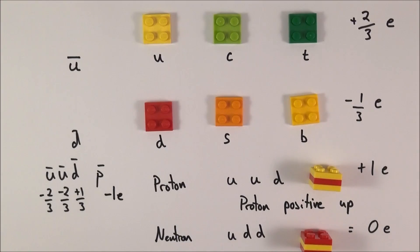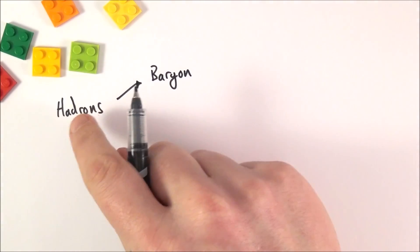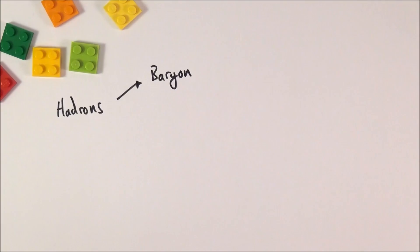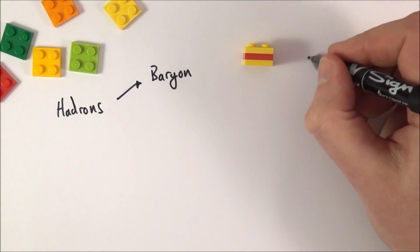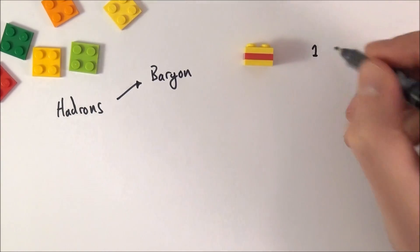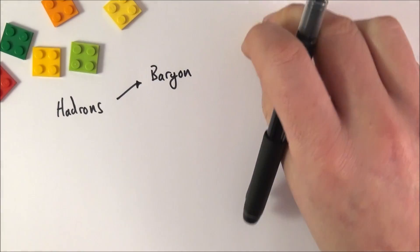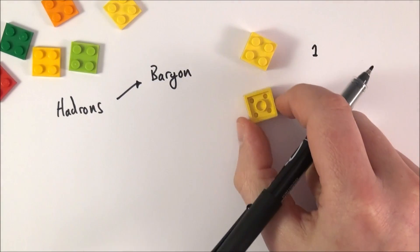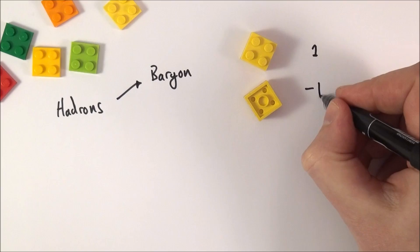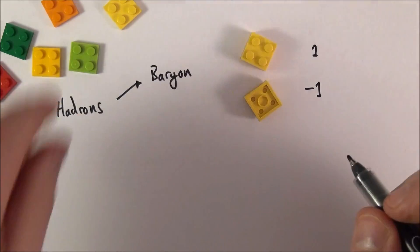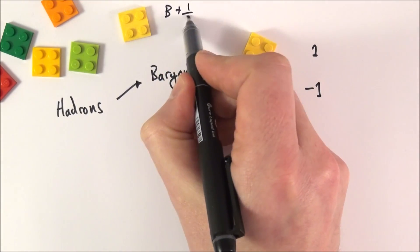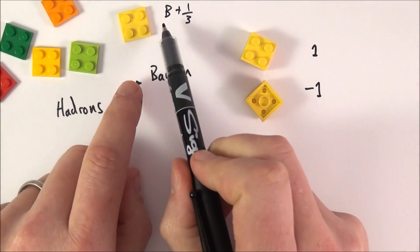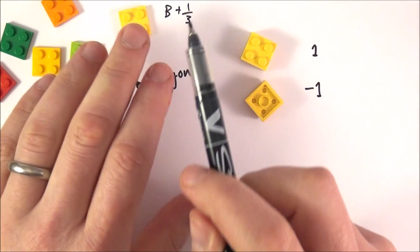When three quarks are joined together we make a baryon. If the particle is made out of normal quarks, it has a baryon number of one. An antibaryon, like an antiproton, has a baryon number of minus one. Each individual quark has a baryon number of plus one-third, and one-third plus one-third plus one-third equals one.